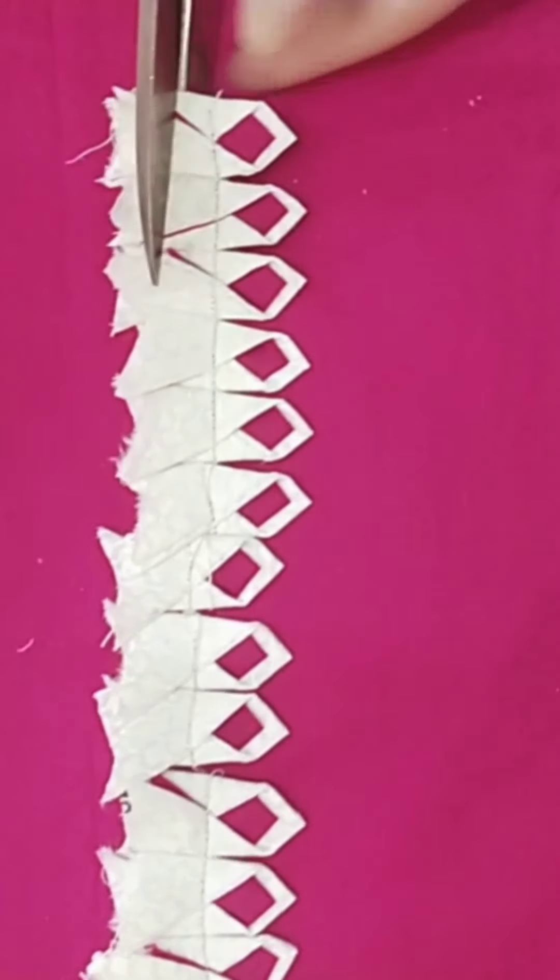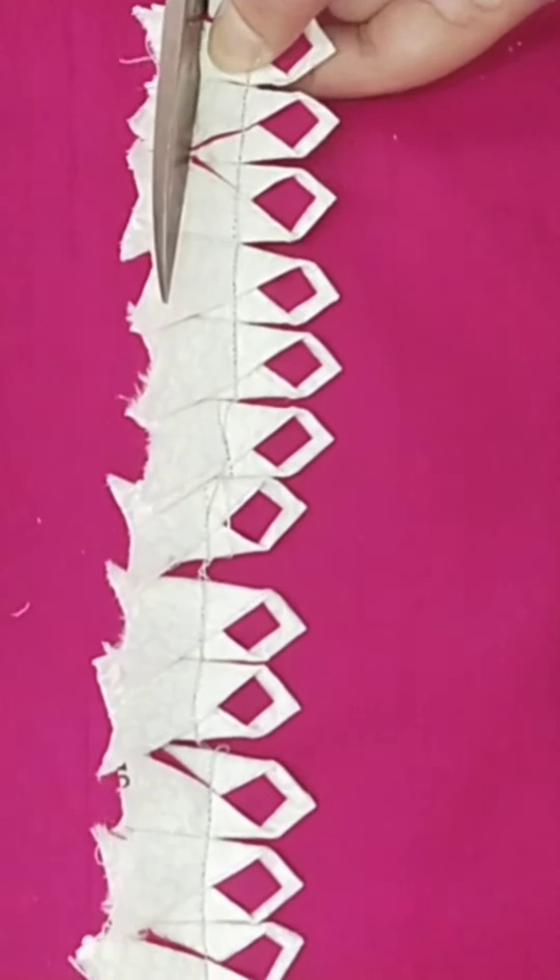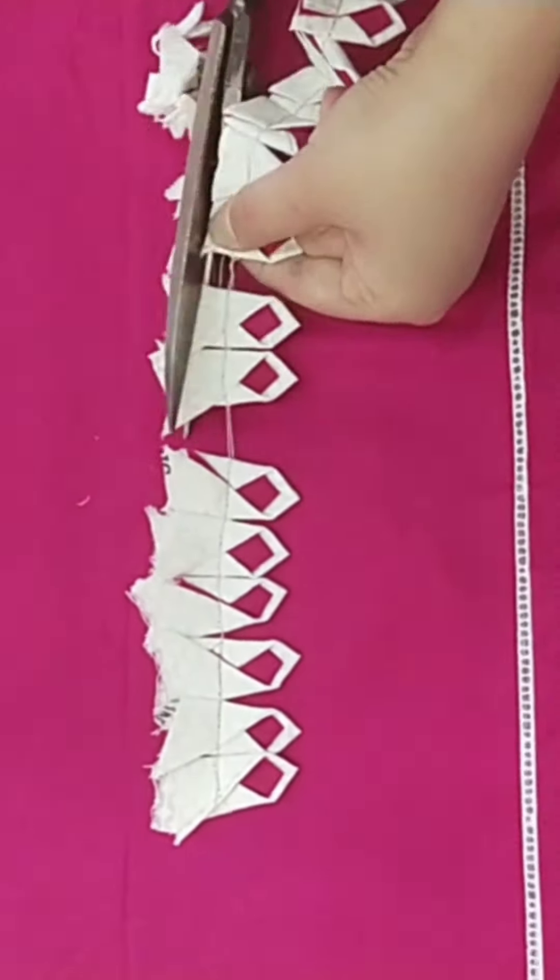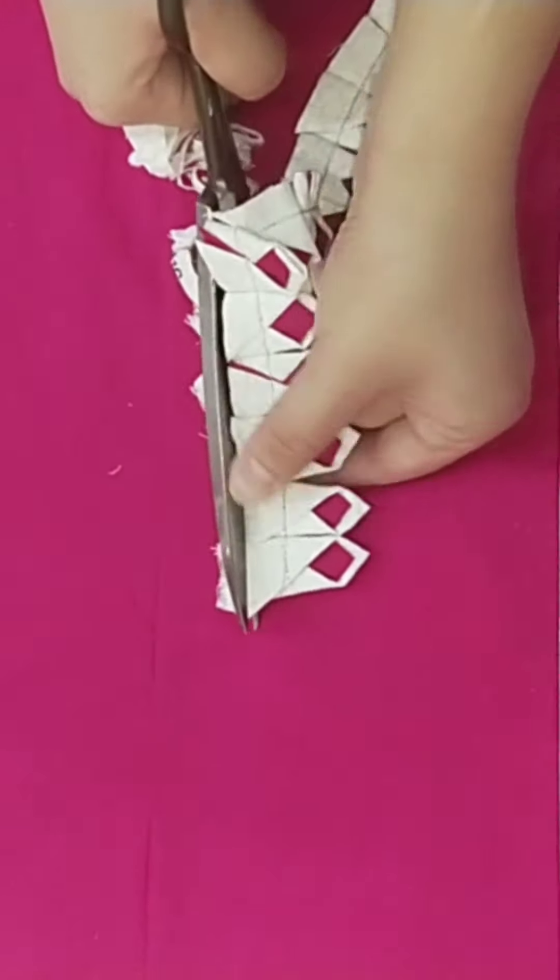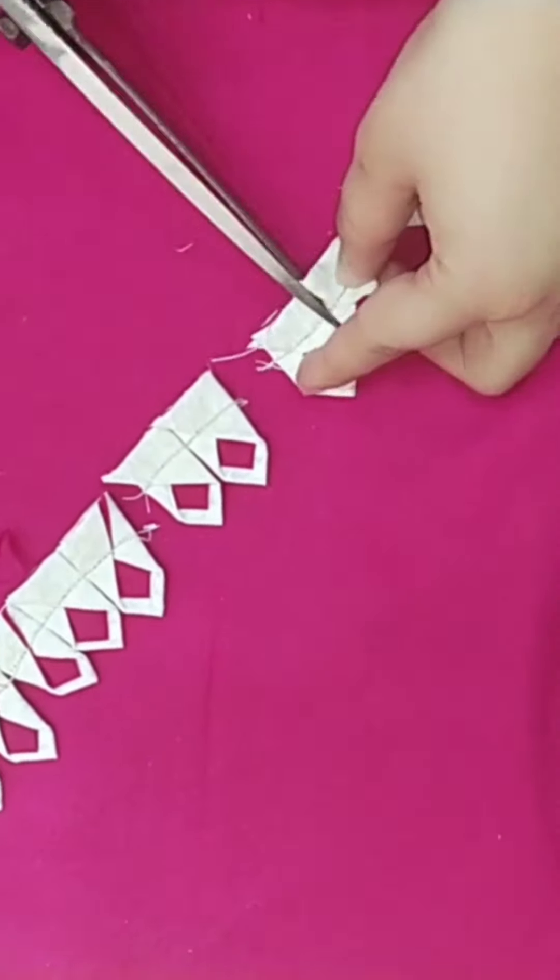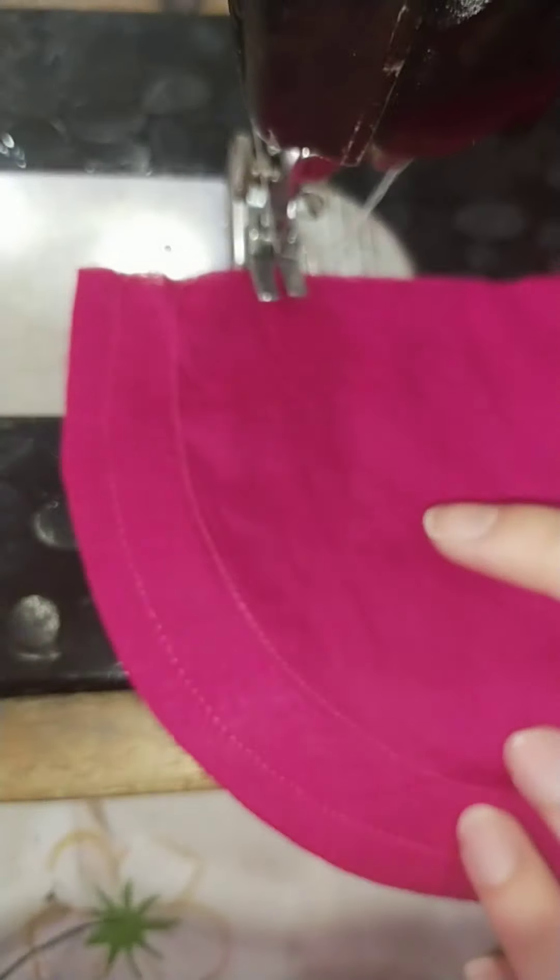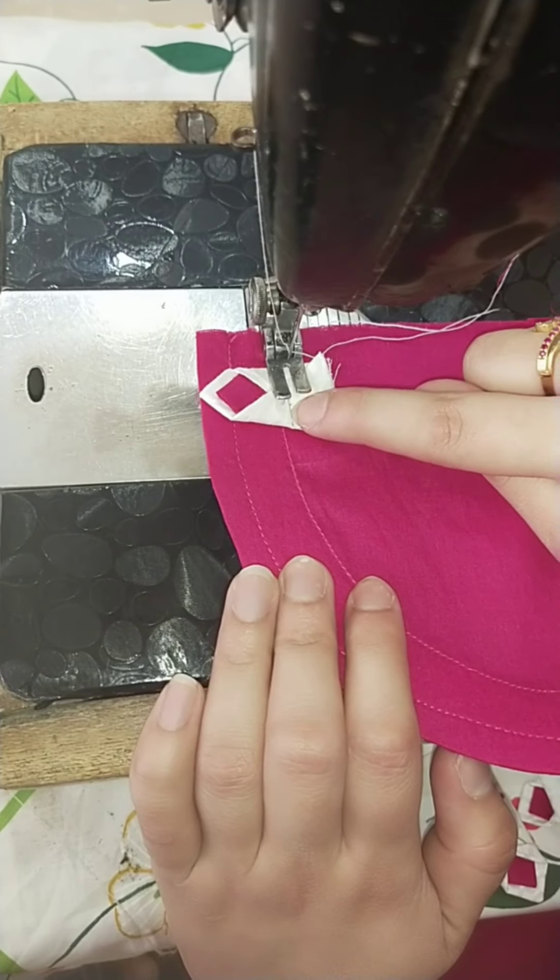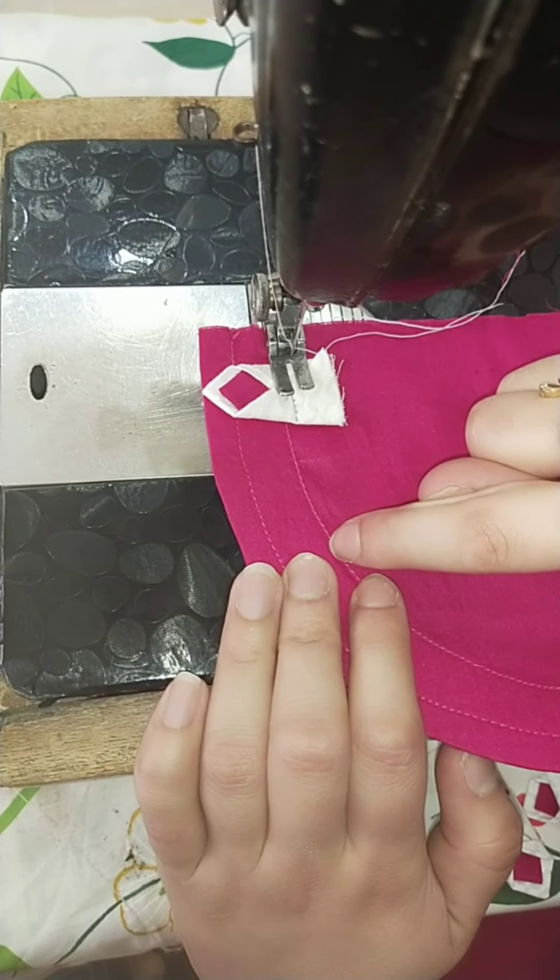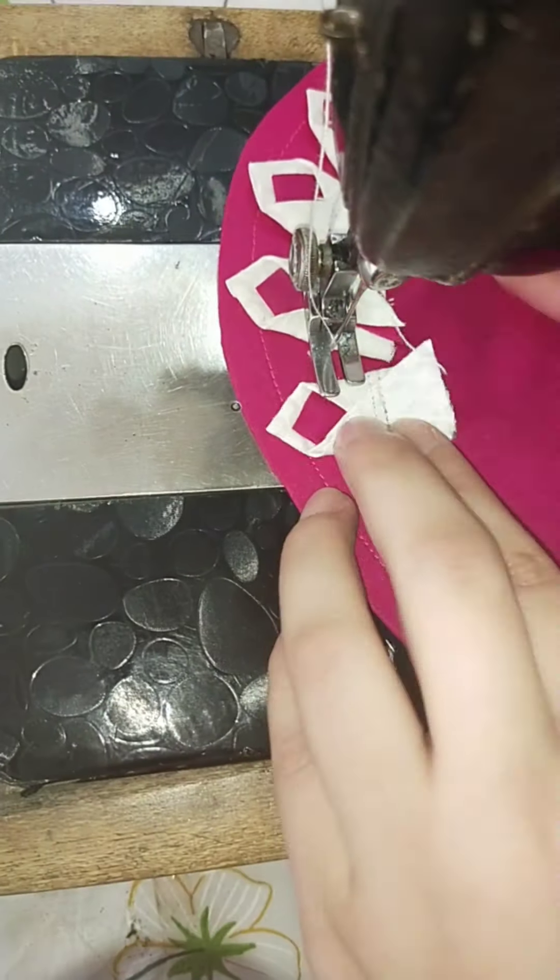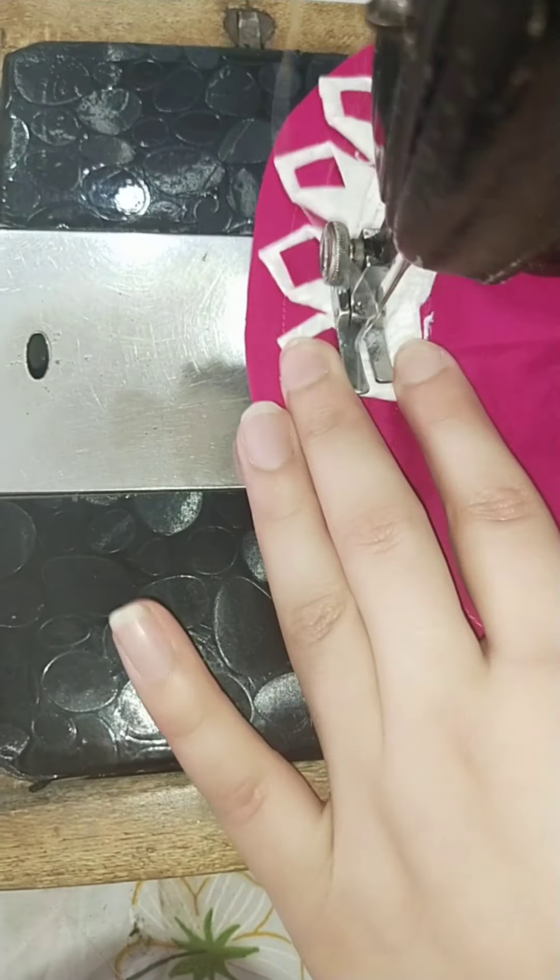We cut the extra fabric and cut the triangles. We cut the back side. After placing the triangles, we cut the triangles.